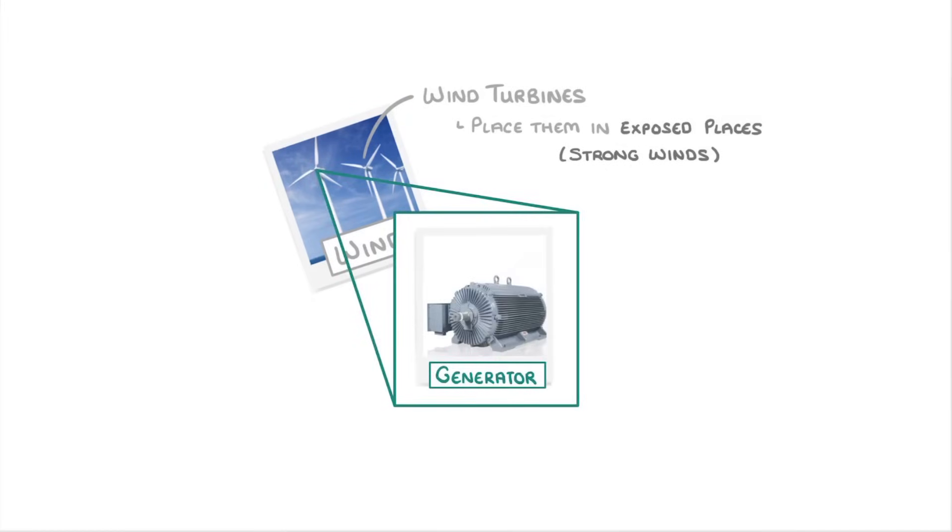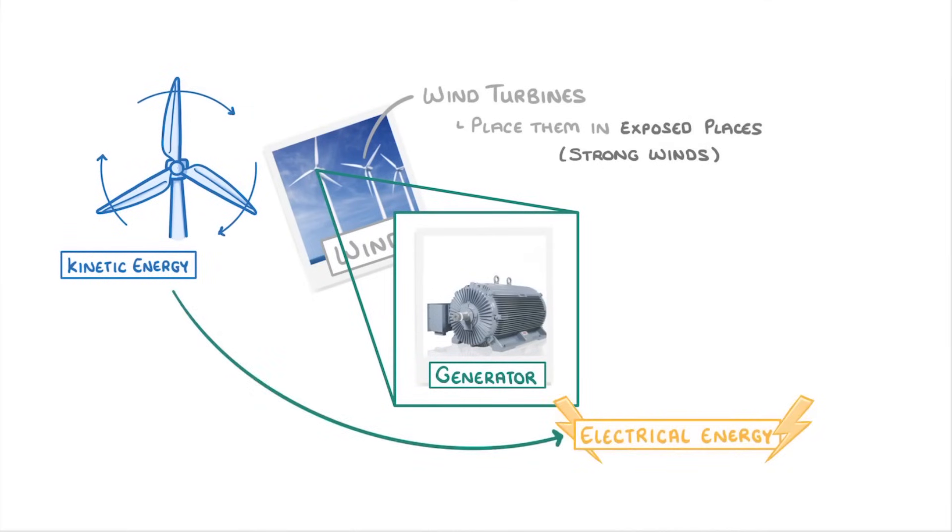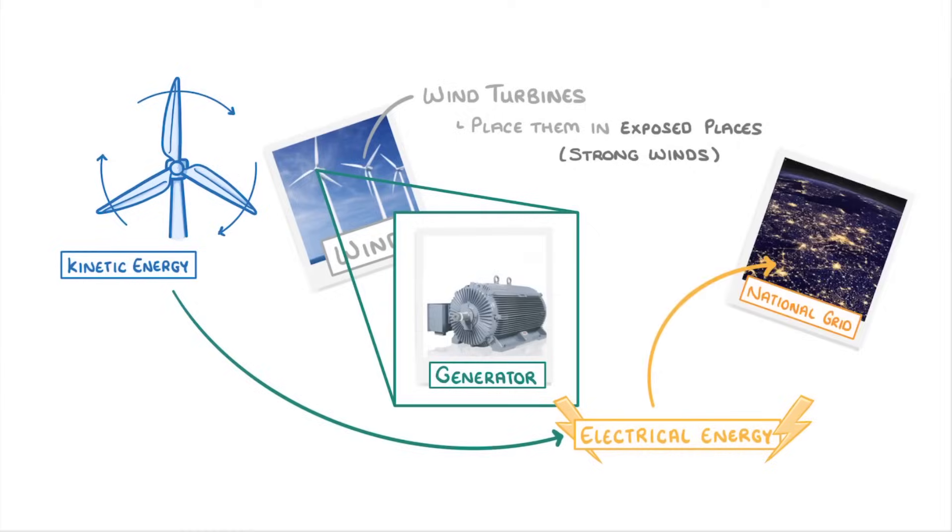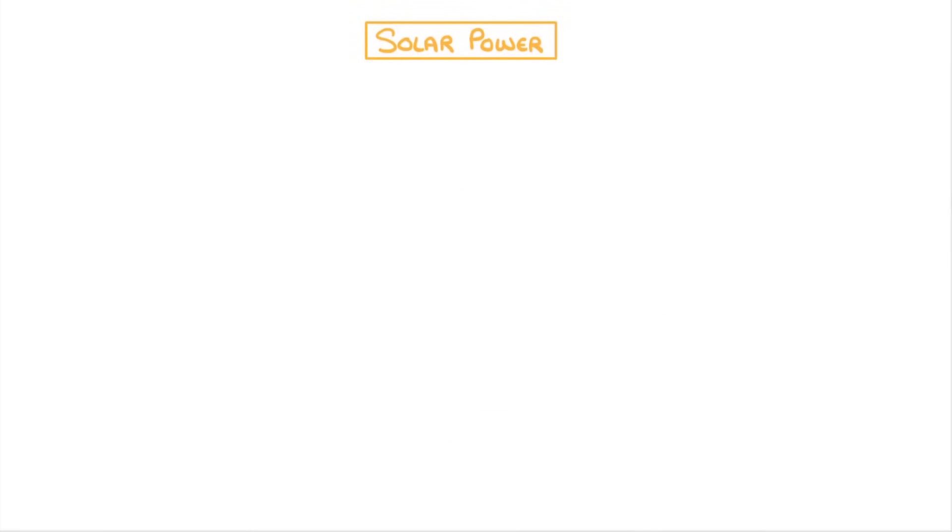As the blades spin in the wind, they turn the generator which converts the kinetic energy from the movement into electrical energy, which can then be transported to the national grid.